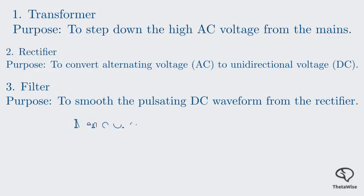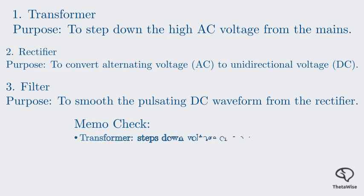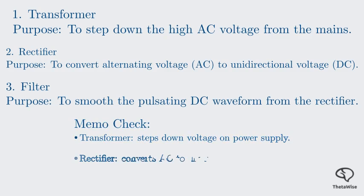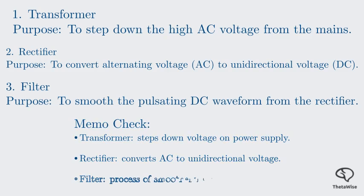Let's compare this with the provided memo. The memo correctly identifies the transformer for stepping down voltage, the rectifier for converting to unidirectional voltage, and the filter for smoothening the DC waveform. Our explanation perfectly matches the requirements. This covers question 4.1.